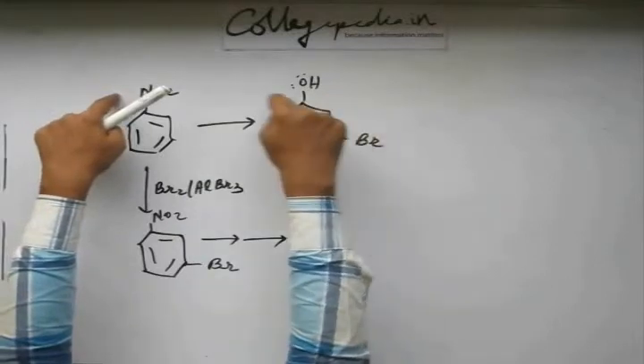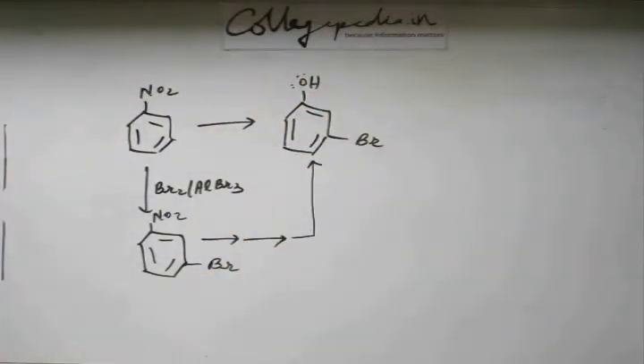To get OH from NO2, you prepare NH2, from NH2 you know how to get OH through diazonium salt. That's the importance of this diazonium salt, it helps you to get various functional groups very easily. So this conversion was an easy one.